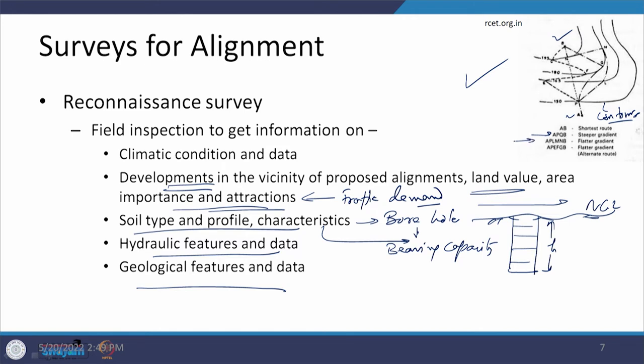If we go from A, P, L, M, and B we have flatter gradients, and if we go with A, P, E, F, G, B then we again have flatter gradients. So maybe these two options are the alternatives to each other, and we are trying to look at further information through the reconnaissance survey on these particular alternatives. Once we have this information, a further decision can be made on what needs to be done.